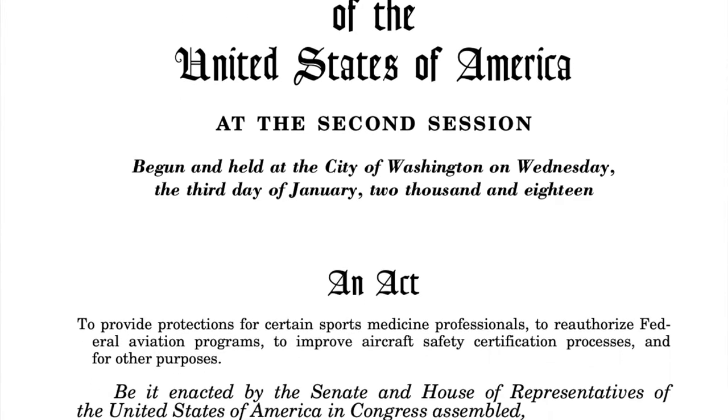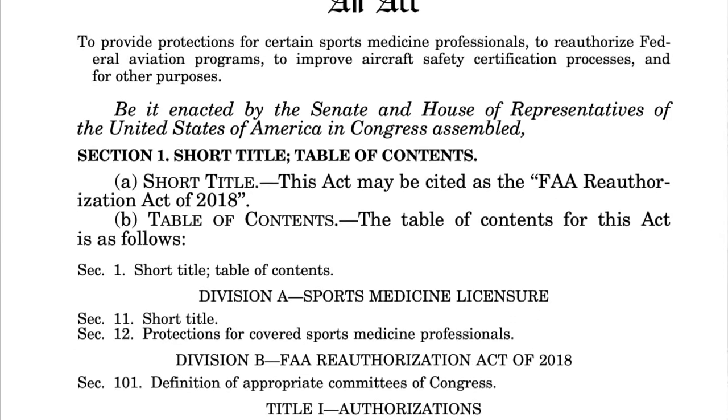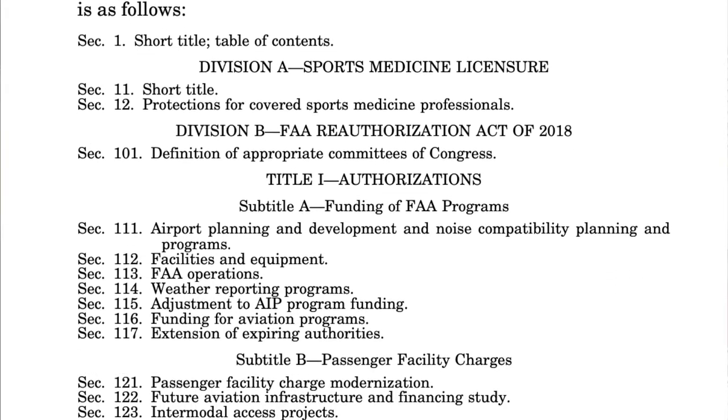Unmanned aircraft made it into an actual act of Congress — specifically the FAA Reauthorization Act of 2018. This act is extremely important because it gives the FAA authorization to operate, funds the FAA, and authorizes the FAA to write regulations. Among the things directed for unmanned aircraft are definitions, a comprehensive plan, use at colleges, privacy review, and much more. These are marching orders from Congress to the FAA.